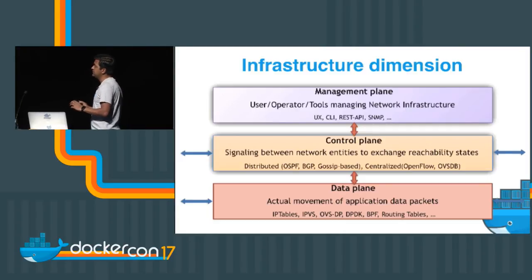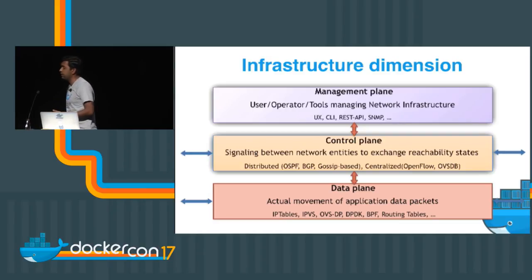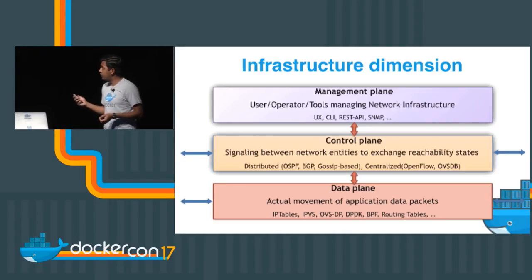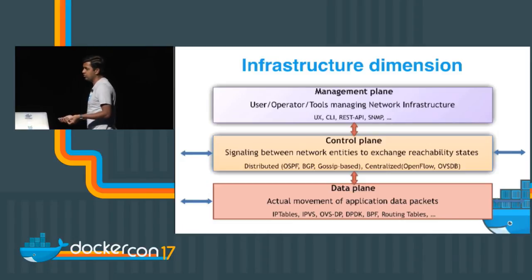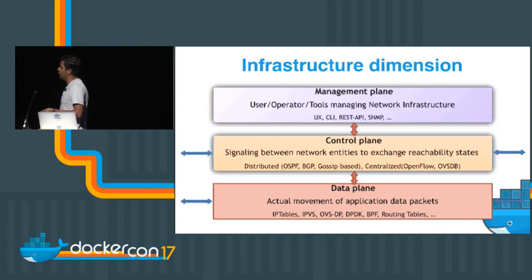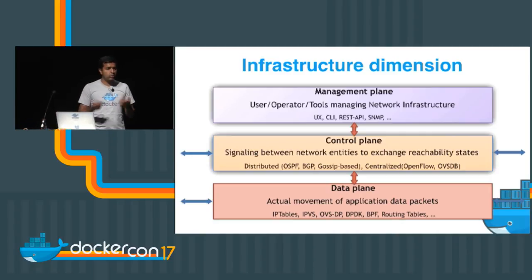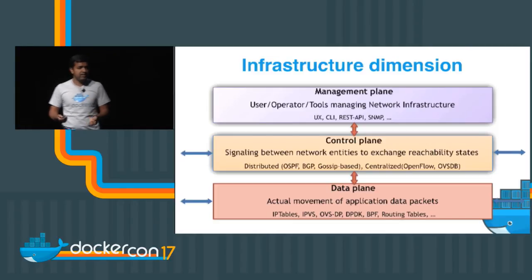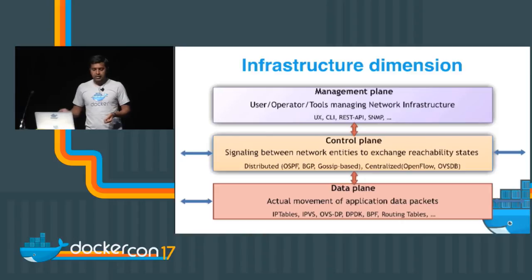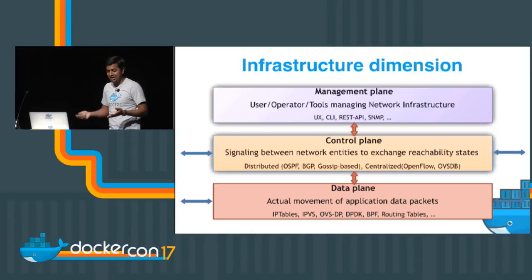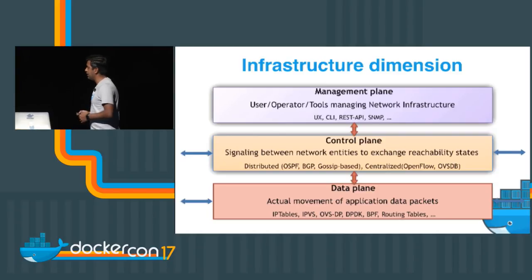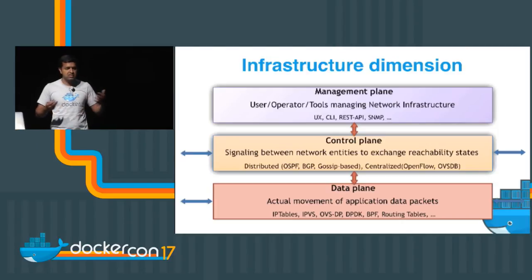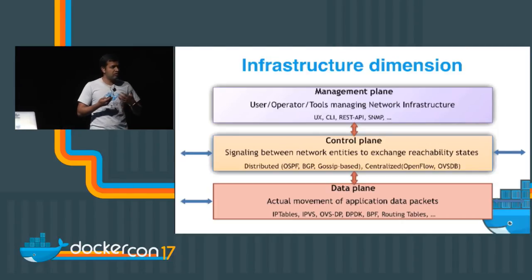Then comes the control plane — this is where the real stuff begins. The control plane is the signaling between various networking entities, like routers or switches, which exchange routing states. If there's a host on node one and another host coming up on node two, they learn about each other using control plane protocols like OSPF, BGP — and in Docker, we use a gossip mechanism. In recent years, there was the SDN explosion, and in the SDN world we talk about centralized control planes like OpenFlow and OVSDB.